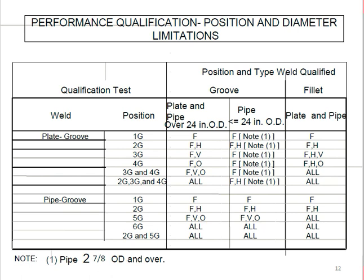For pipe groove positions: 1G (rotated) qualifies for flat only; 2G qualifies for flat and horizontal; 5G (not rotated) qualifies for flat, vertical, and overhead; 6G (45-degree angle) combined with 2G and 5G qualifies for all positions. A welder qualified in 6G is qualified for all positions.